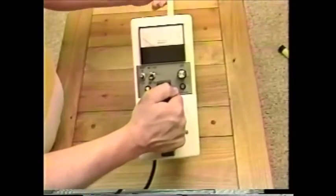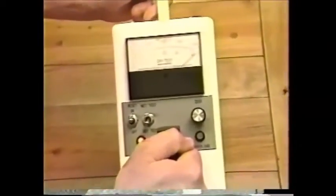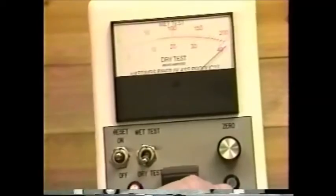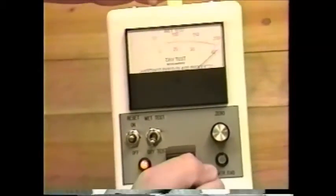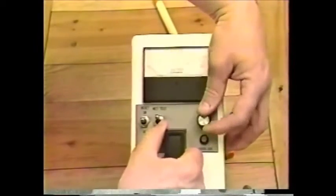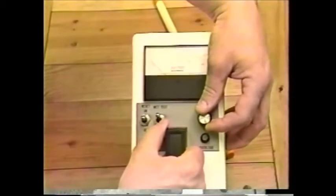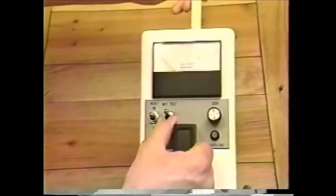When the dry scale is selected and zeroed, a full scale reading should result when the test bar is inserted. When the wet scale is selected, an indication of between 25 and 50 microamps will result.